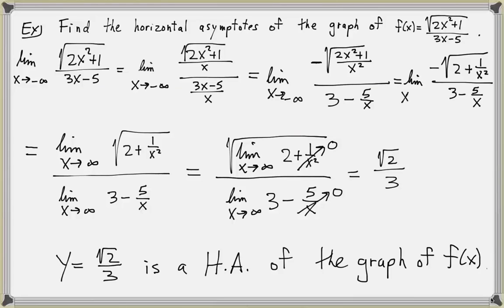We're looking at the limit as x approaches negative infinity. We can take the limit of the numerator divided by the limit of the denominator, and take the limit inside the square root symbol. The 1 over x squared will go to 0, and the 5 over x will still approach 0. So we get negative square root of 2 over 3. The line y equals negative square root of 2 over 3 is also a horizontal asymptote of the graph of f of x.